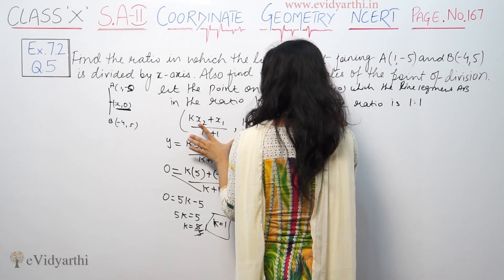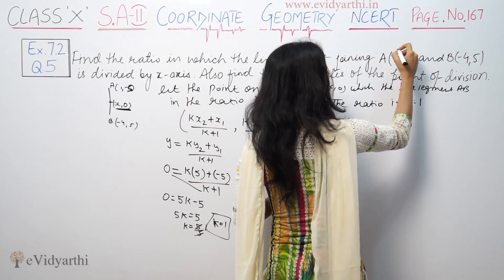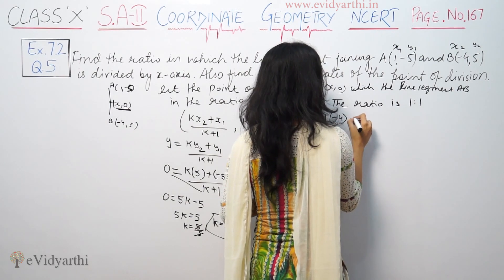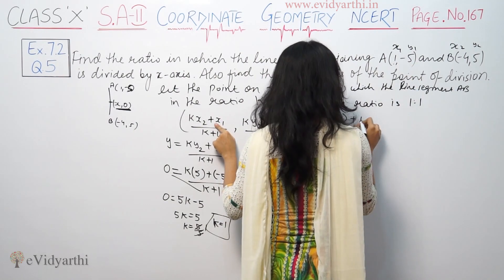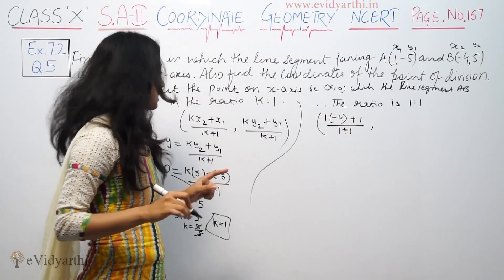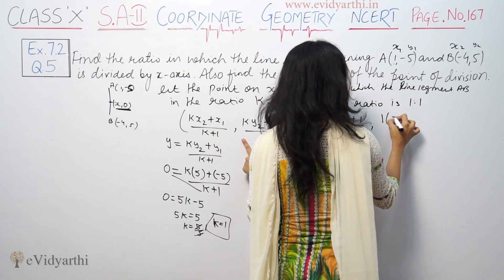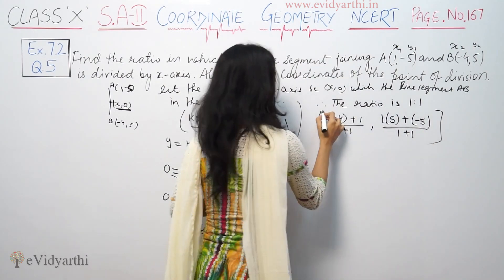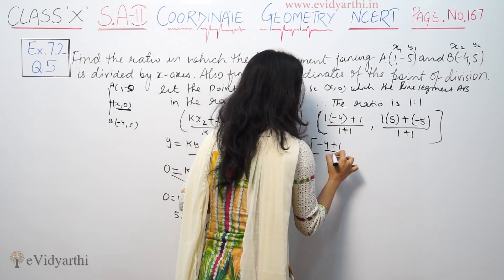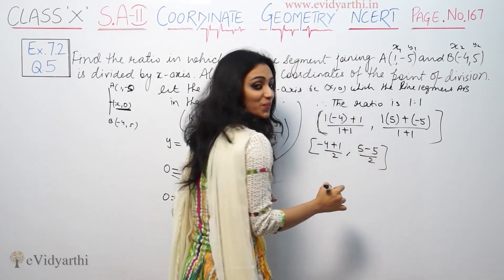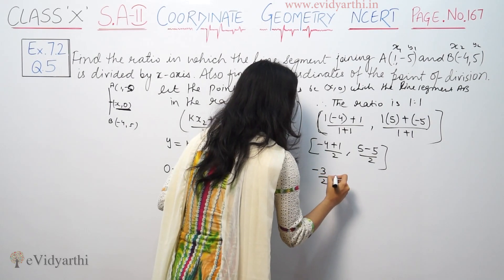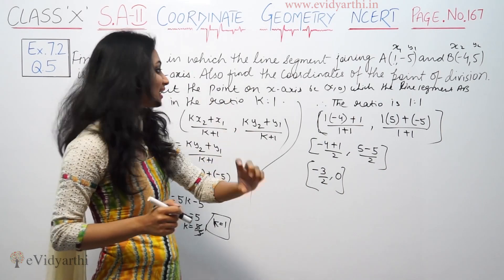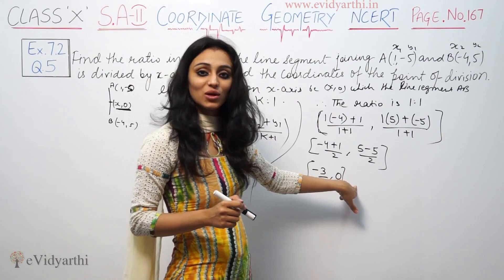Using k = 1, the point of division is: x = (-4 + 1)/(1 + 1) = -3/2, and y = (5 - 5)/(1 + 1) = 0. So the coordinates are (-3/2, 0), which is where the line segment is divided on the x-axis.